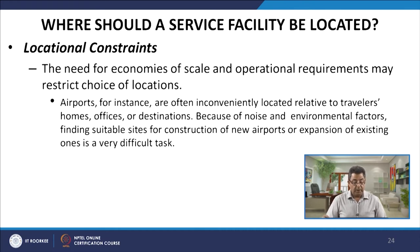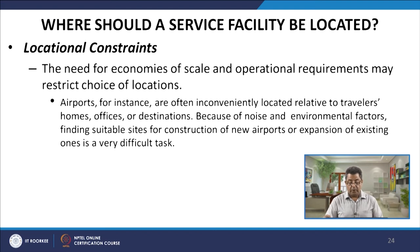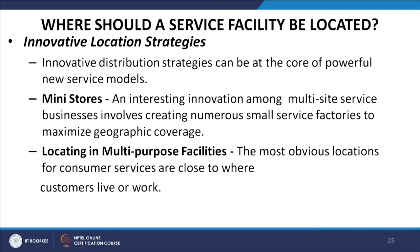Location constraints: the need for economies of scale and operational requirements may restrict choice of location. Airports, for instance, are often inconveniently located relative to travelers' homes, offices, or destinations. Because of noise and environmental factors, finding suitable sites for construction of a new airport or expansion of an existing one is a very difficult task — sometimes the location is not suitable or not available at all. This brings up another important issue: innovative location strategies. Innovative distribution strategies can be at the core of a powerful new service model. The first innovative location strategy is mini stores — creating numerous small service factories to maximize geographic coverage instead of having one big store.